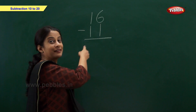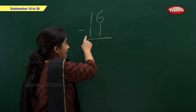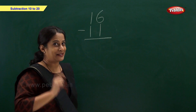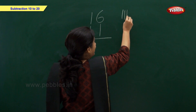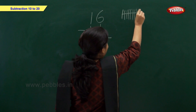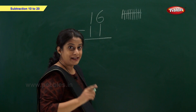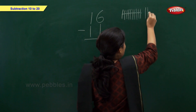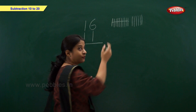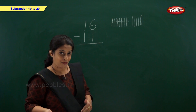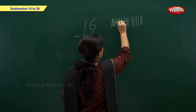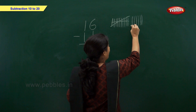Let us solve this example. Now we have 16 minus 11. 16 means 1 ten and 6 ones. Let's draw: 1, 2, 3, 4, 5, 6, 7, 8, 9, 10 — this is our bundle of 10, that is 1 ten. Then 1, 2, 3, 4, 5, 6 — so we have 1 ten and 6 ones, that is 16. Now let's take away 11 from 16. 11 is 1 ten and 1 one, so let's take away 1 ten and 1 one.